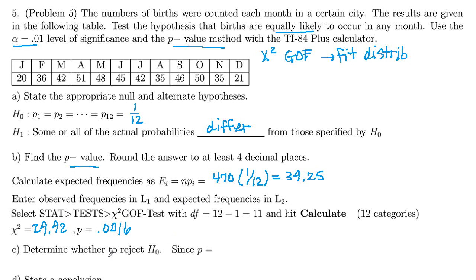And now we want to determine whether we reject H₀, reject the null hypothesis. Well, we're using the 0.01 level of significance. So our p-value here is 0.0016, and that is less than 0.01, which is our alpha. If p is less than alpha, you are going to reject the null hypothesis. So we'll reject H₀.